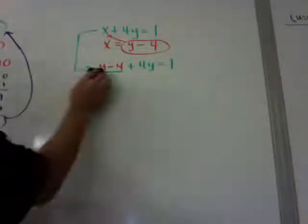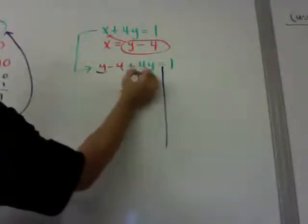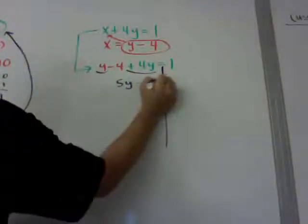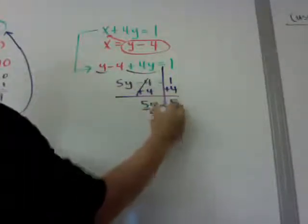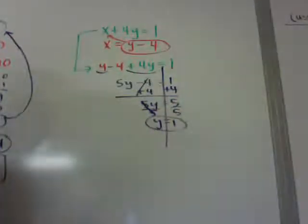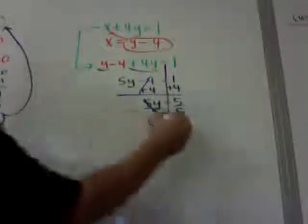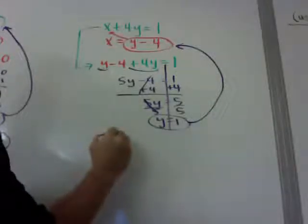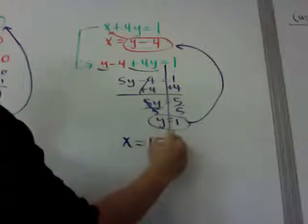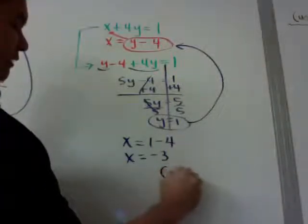Now I can combine my like terms since they're on the same side of the equal sign, and I get 5y minus 4 is equal to 1. I'm going to add 4 to both sides: 5y is equal to 5. Divide both sides by 5 and y is equal to 1. This time I got y first instead of x, which is still okay, but now I still need to find x. I'm going to put it into the easier equation: x is equal to 1 minus 4, so x is going to equal negative 3. My answer is negative 3 comma 1.